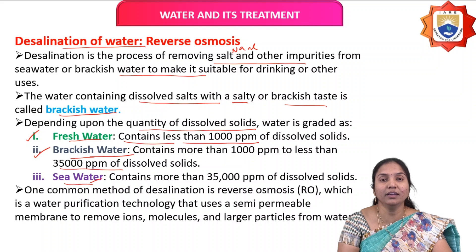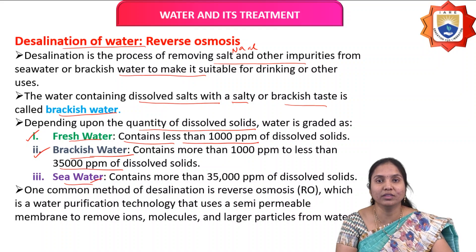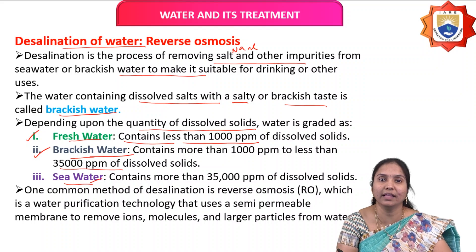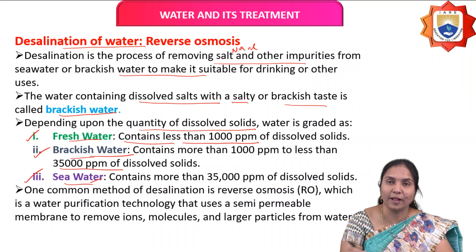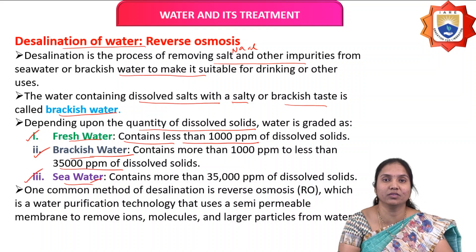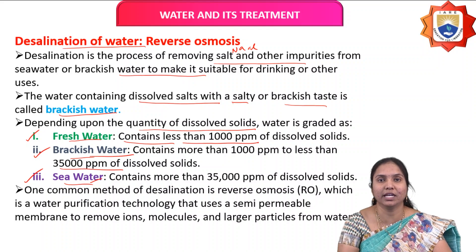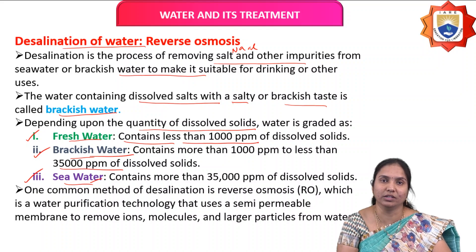Water containing more than 35,000 ppm of dissolved solids is considered sea water. So based on the quantity of dissolved solids, water is classified into three types: fresh water, brackish water, and sea water.